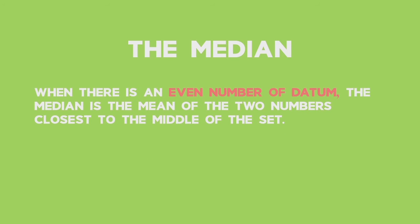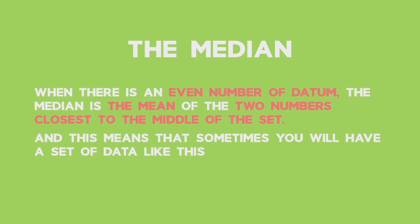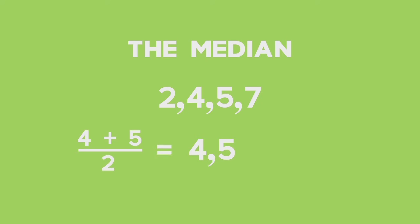When there's an even number of datum, the median is the mean of the two numbers closest to the middle of the set. For example, with two, four, five, and seven, the median is the value in the middle — between four and five, which is four and a half. You get that by adding the two numbers together and dividing by two. And these are our basic measures of central tendency.